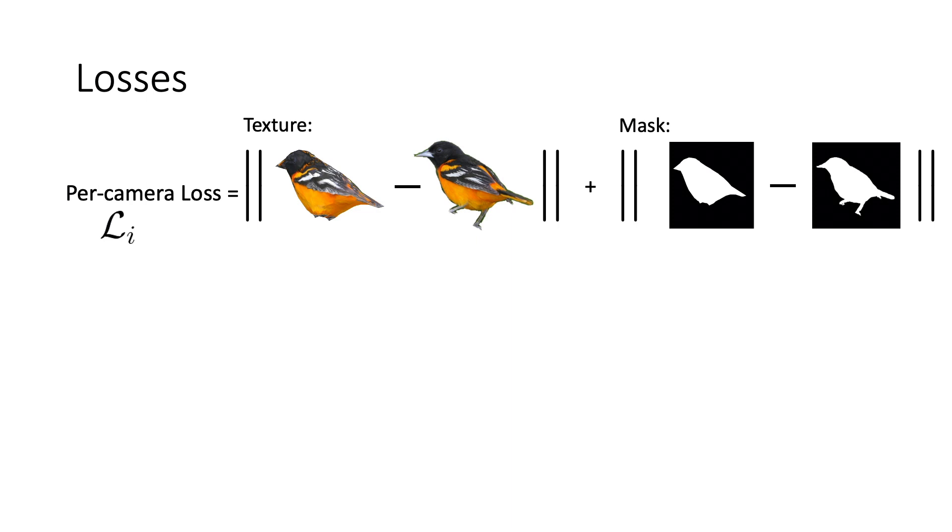The per-camera loss is the summation of a texture loss and a mask loss between the rendered and ground truth textures and silhouettes respectively.